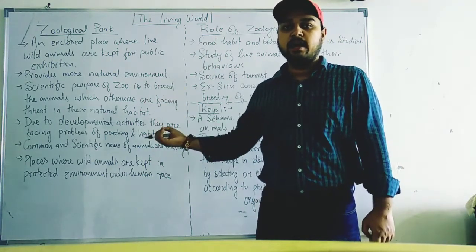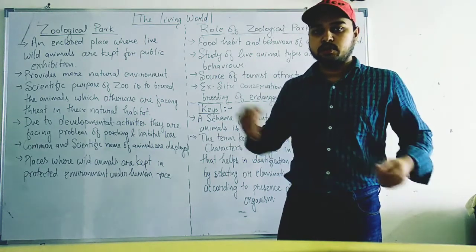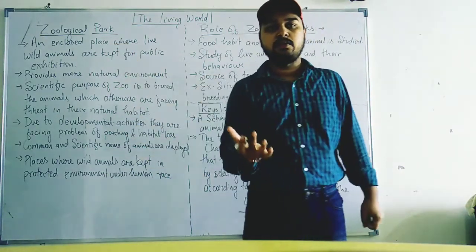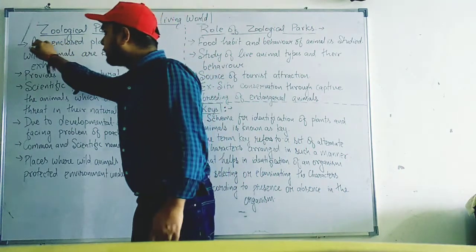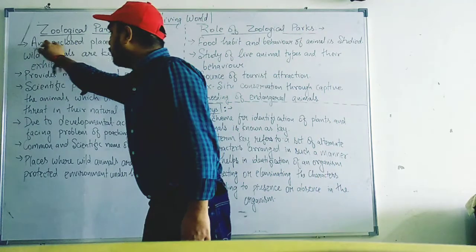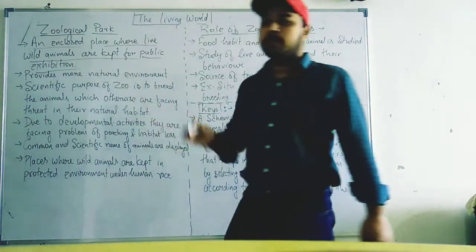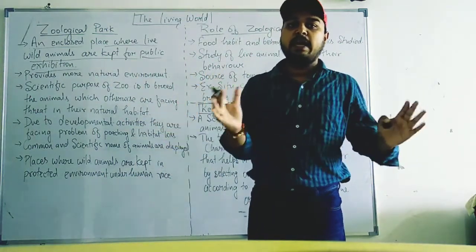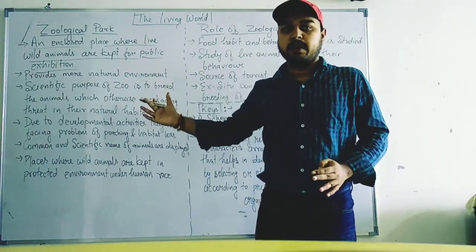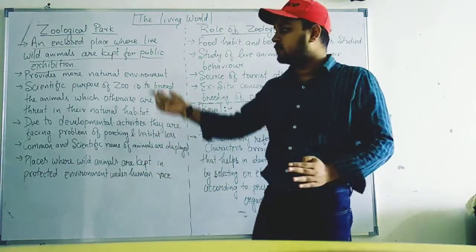Likewise museum and botanical garden. Today onwards we are going to start the zoological park, or the zoo. Most of you have visited the zoo. So, zoological park — its definition is an enclosed place where live wild animals are kept for public exhibition.